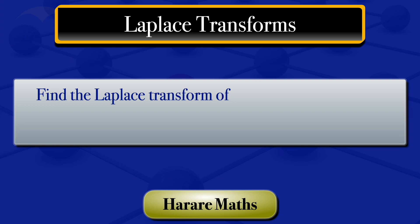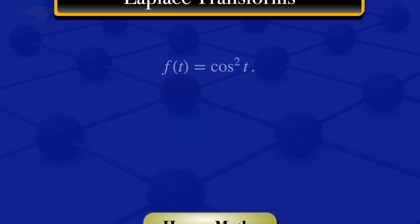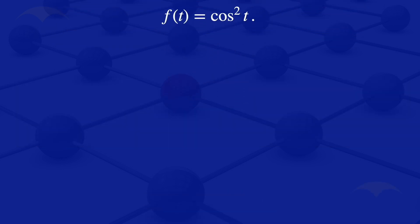In this tutorial, we are going to use tables to find the Laplace transform of f of t, which equals cosine squared t. Given a function f of t, the Laplace transform is denoted by f of s. So in this case, we'll be finding the Laplace transform of cosine squared t.